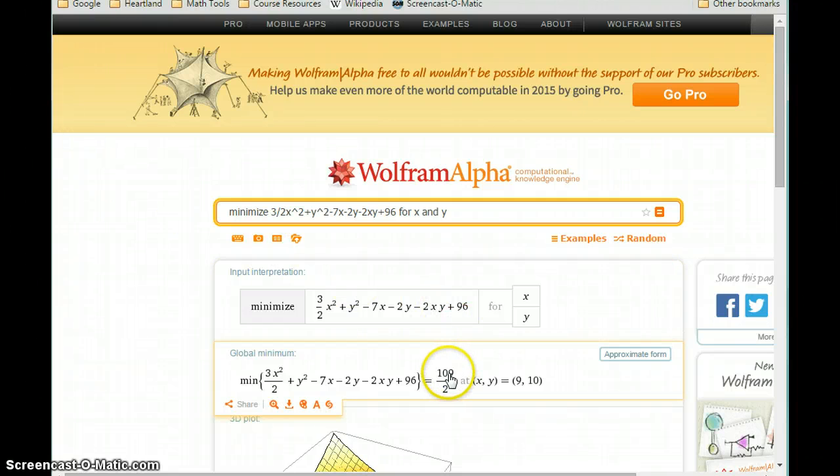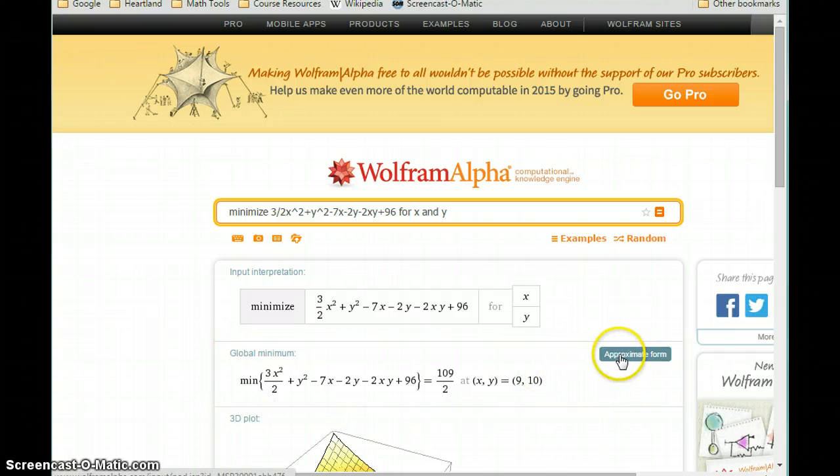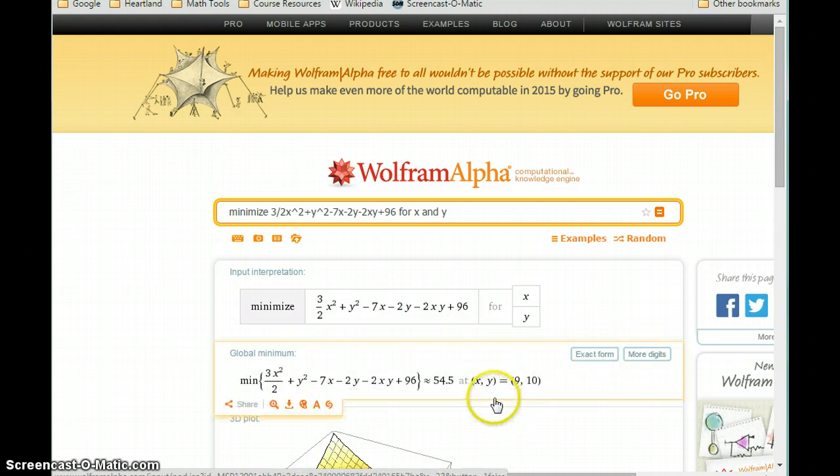So in this case this comes out as a maximized function value of 109 over 2, so we can change that to an approximate form to get our values of x equals 9, y equals 10, and our maximized function value of 54.5.